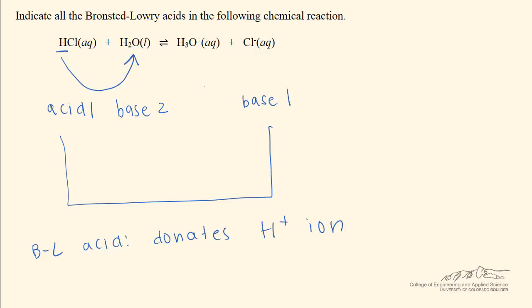We can see that this reaction is in equilibrium by this double arrow here. The chloride ion can accept a hydrogen ion from hydronium to go back to hydrochloric acid, so this reaction can move forwards or backwards. The chloride ion serves as a conjugate base. In the same way, hydronium can be labeled as acid 2 because it forms a conjugate pair with water. Hydronium can act as an acid by donating an ion to the chloride ion, and so we can see the conjugate pairs.